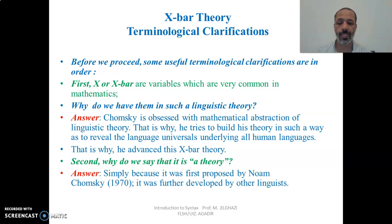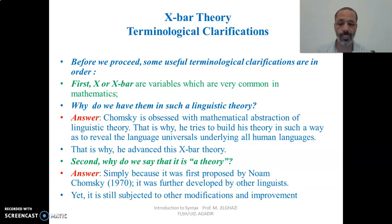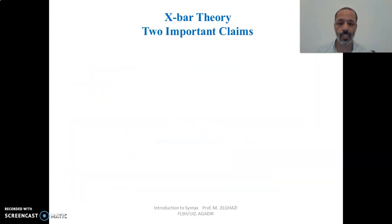Why do we say that it's a theory? Very simply, because it was first proposed by Noam Chomsky in 1970, and it was further developed by other linguists, and it is still subjected to other modifications and improvements. So it's a theory, and it's not a scientific fact which cannot be changed. It is always viable to modifications, improvements, and changes.